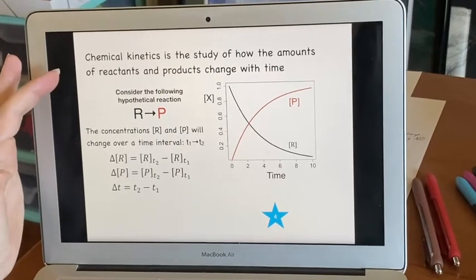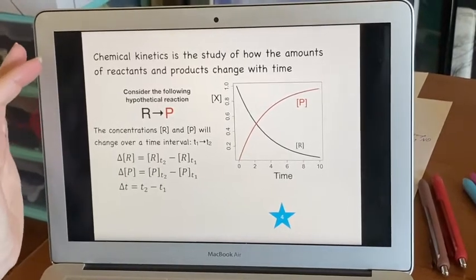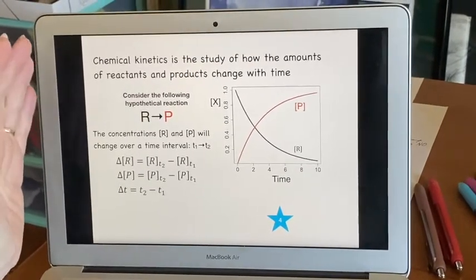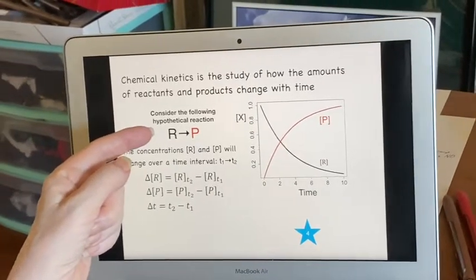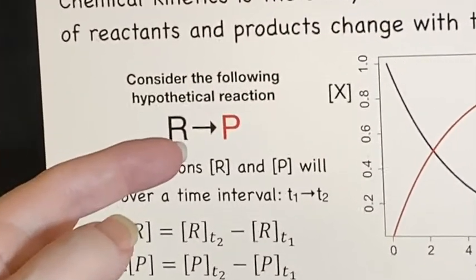When we're looking at kinetics, we're talking about how the amounts of the reactants and the products change with time. We're making this very simple to begin with. We're just talking about reactants turning into products.